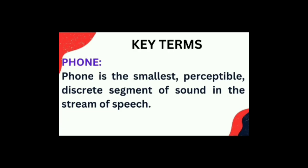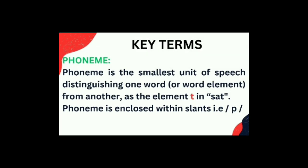Key terms: Number one is Phon, that is the smallest perceptible discrete segment of sound in the stream of speech. Phoneme is the smallest unit of speech distinguishing one word or word element from another. Phoneme is written or enclosed within slants.